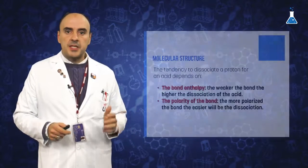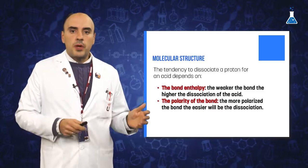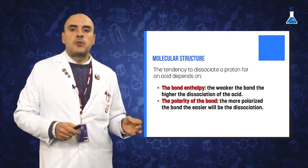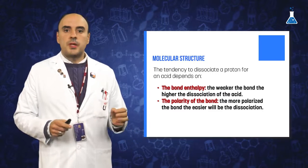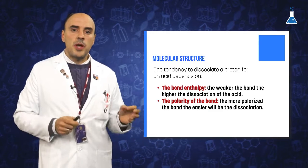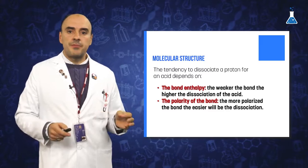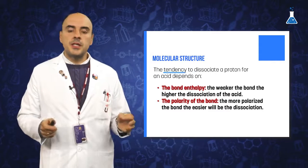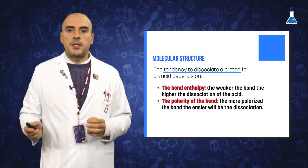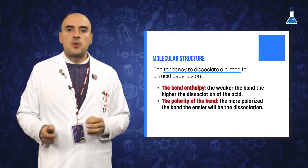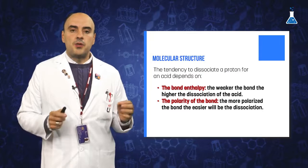The last aspect to consider is the dependence of acid and base strength on molecular structure. This is a key factor when we compare the strength of two compounds at the same temperature and in the same solvent. With respect to an acid, we will be able to estimate its strength if we can deduce its tendency to dissociate a proton. In order to estimate the extent of that process, we need to consider two parameters.